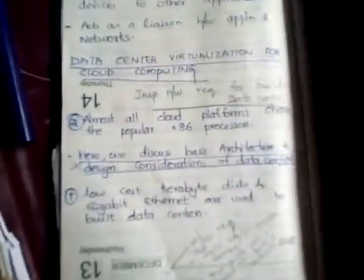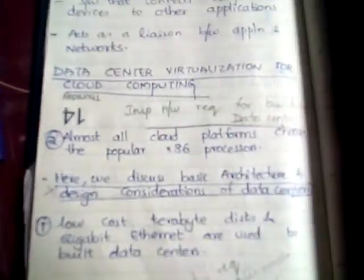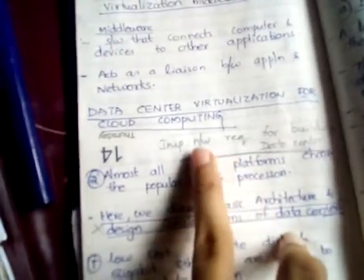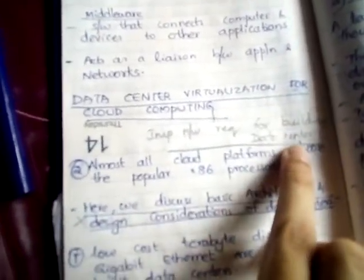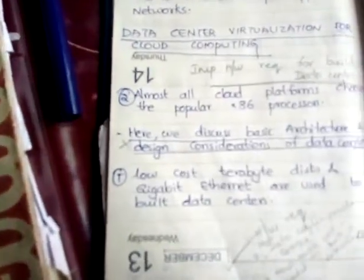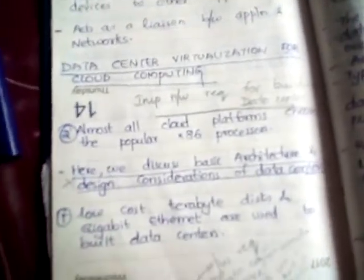Hi everyone, today I'm going to discuss data center virtualization for cloud computing. The important hardware requirements for building data centers - first is gigabit internet, that is the first thing.